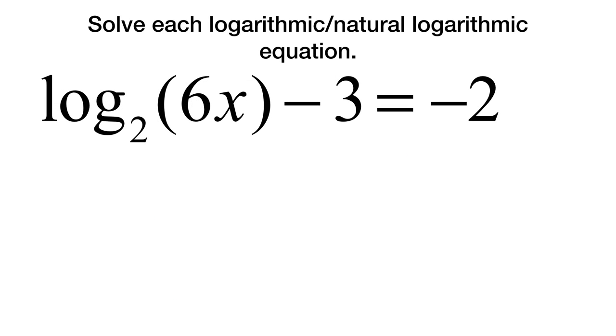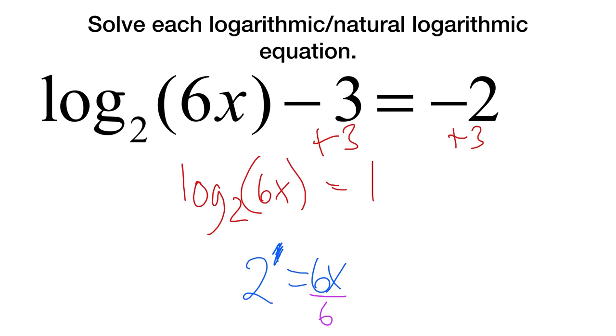Okay, so now let's look at this one. Once again, we want to get the log or the exponential equation by itself each time. So this time you'll notice it says minus 3. So our first step is to add 3 to both sides, which means log base 2 of 6x is 1. So 2 to the first power is 6x. Now 2 to the first power is just 2. So divide by 6, 2 sixths is the same as 1 third, which is x.